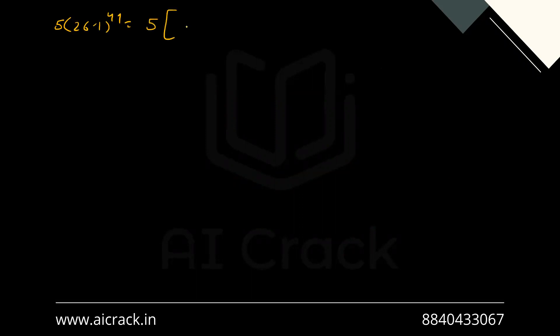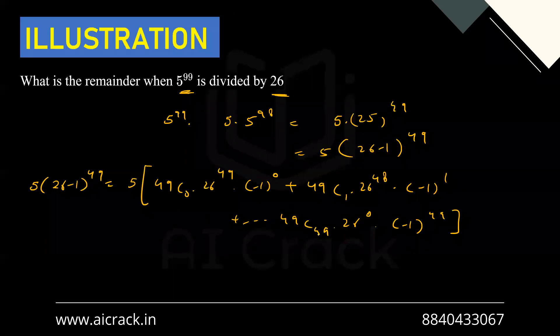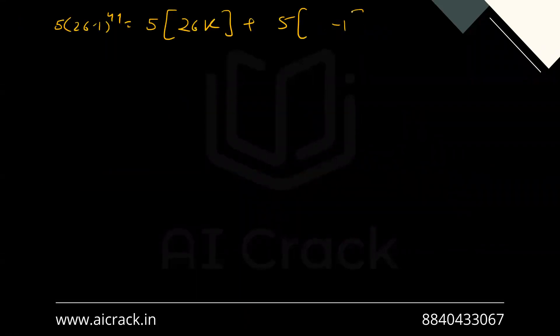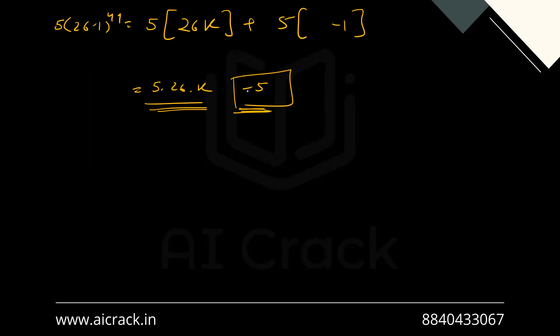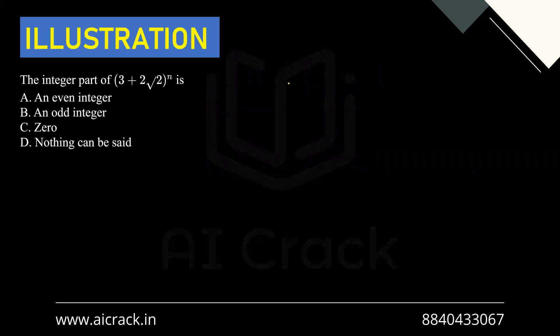So we can split this into two parts: 5·(26k) + 5·(-1)^49, which gives 5·26·k - 5. The first part is divisible by 26, and -5 is the remainder. Since we cannot report a negative remainder, we take one factor of 26 and add it: 26 - 5 = 21. So 21 is the remainder.